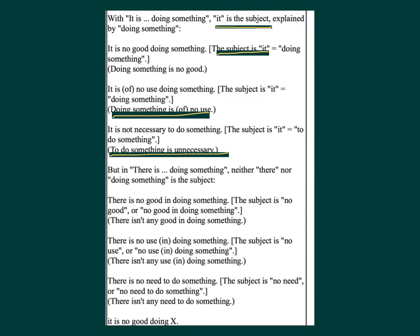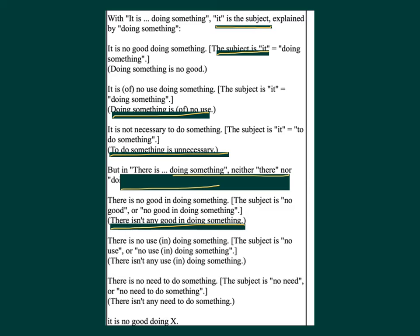In 'There is no good in doing something,' neither 'there' nor 'doing something' is the subject — the subject is 'no good,' meaning 'there isn't any good in doing something.' Similarly, 'There is no use in doing something' means 'there isn't any use in doing something.' And 'There is no need to do something' means 'there isn't any need to do something.'